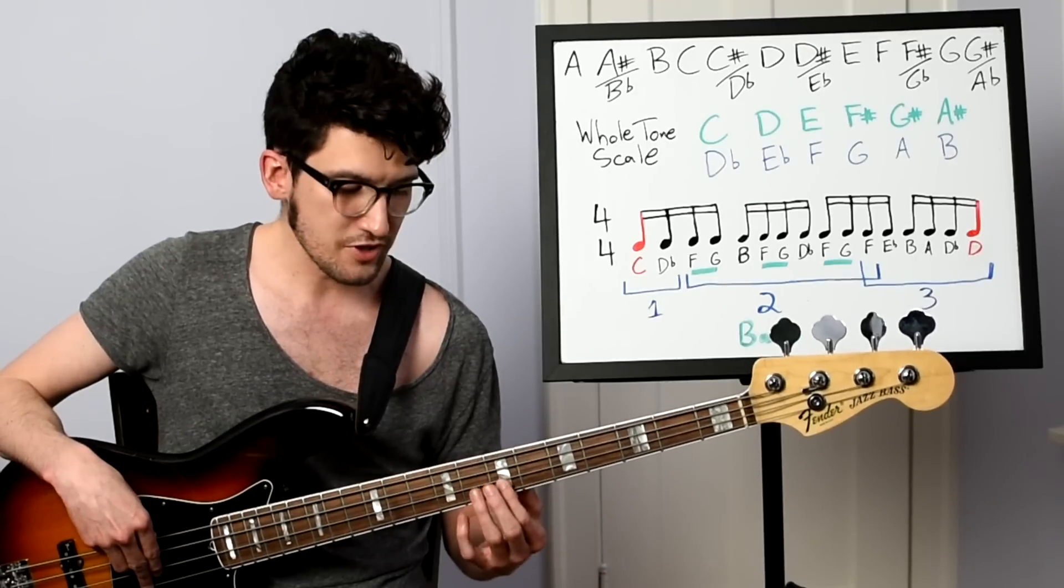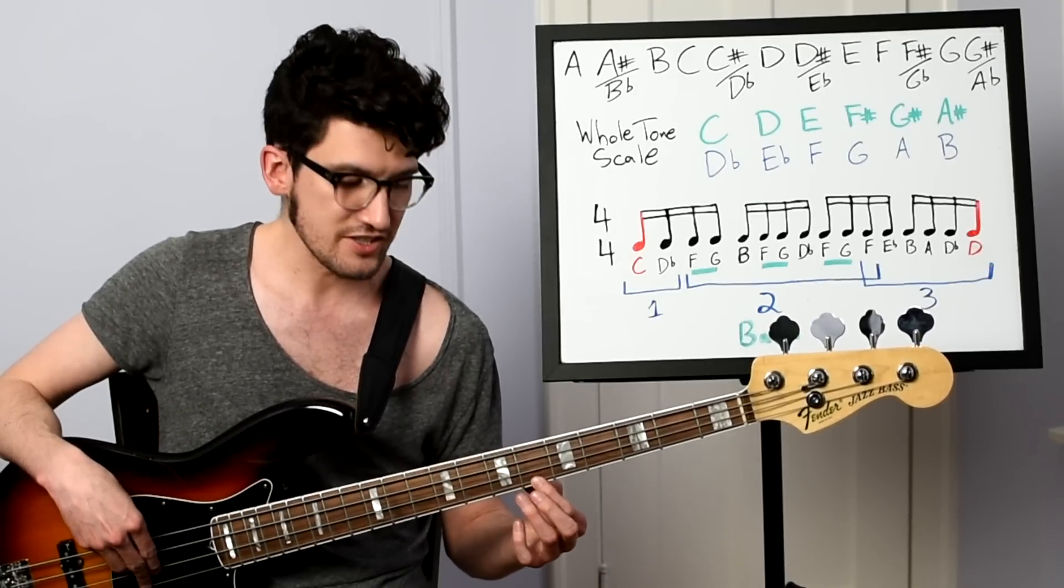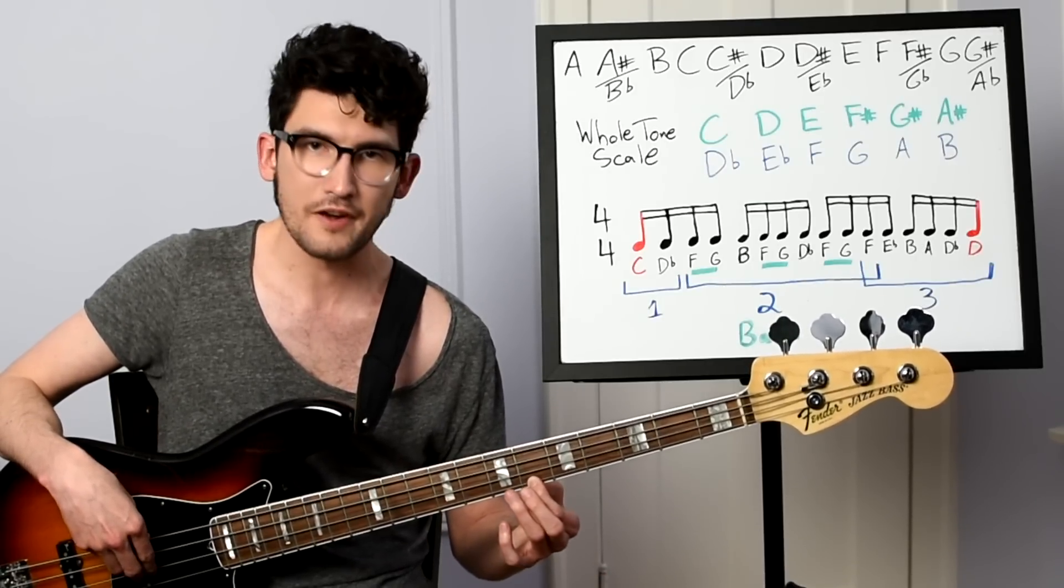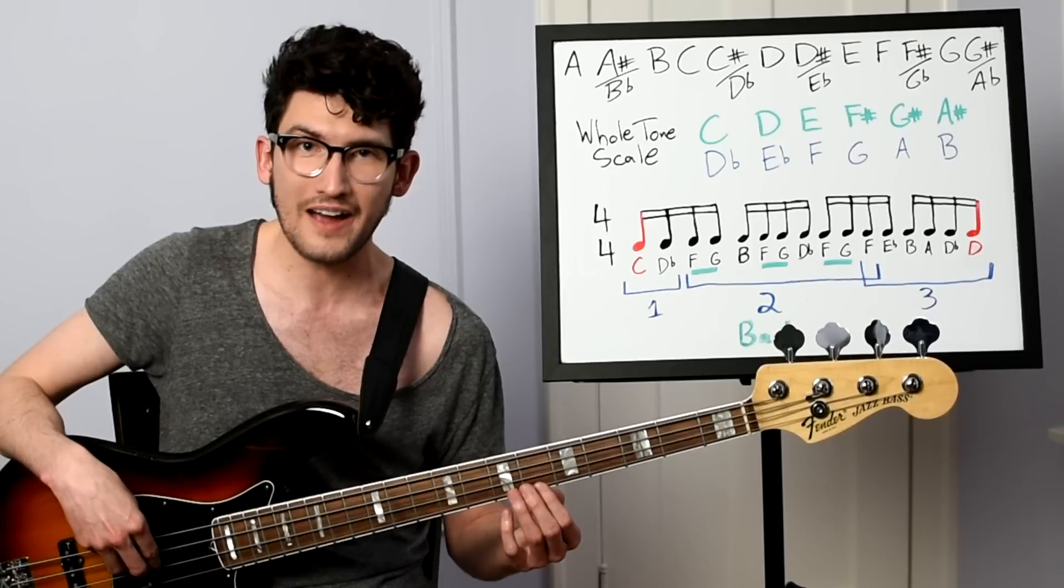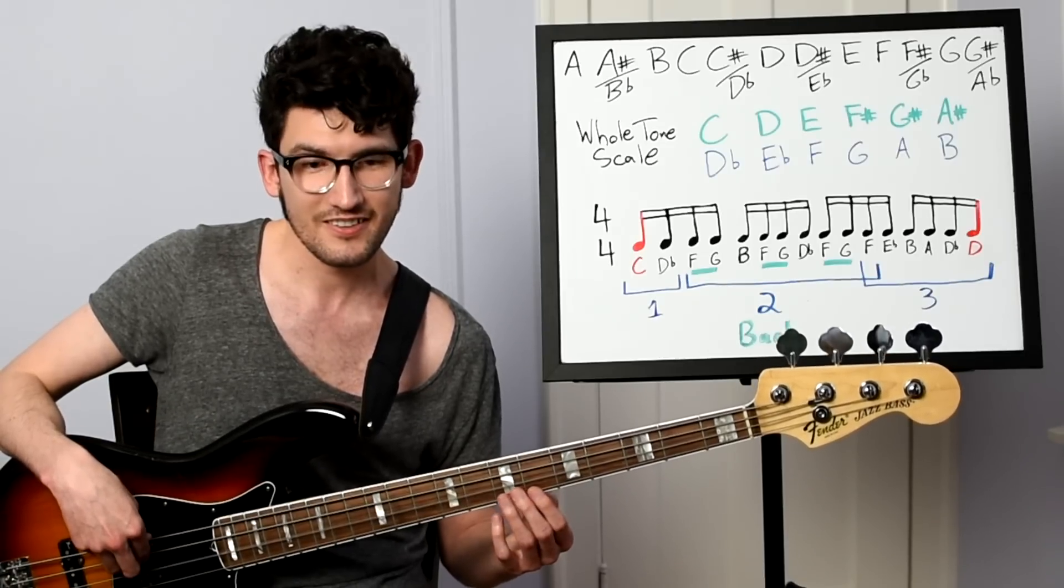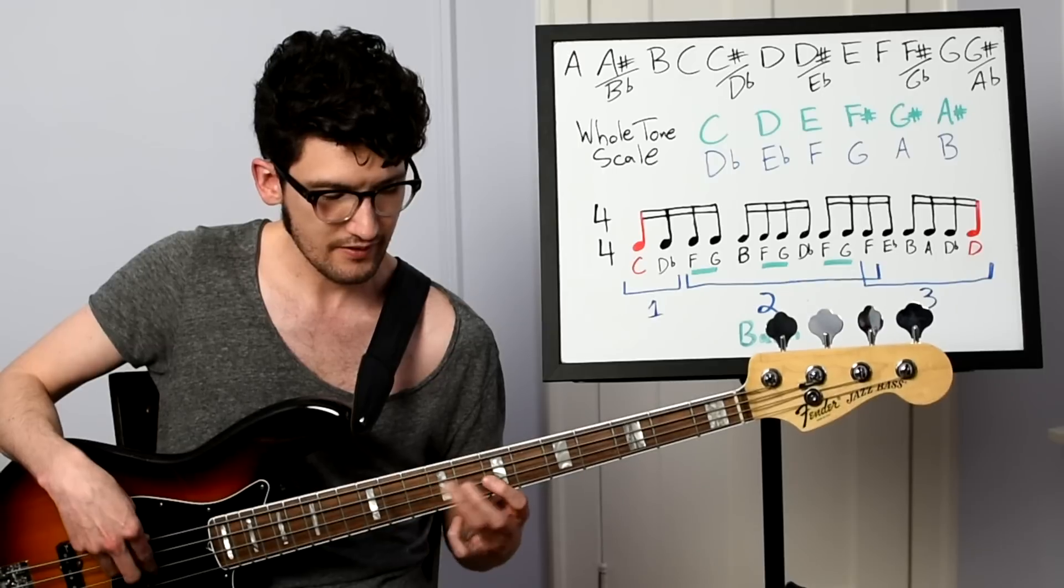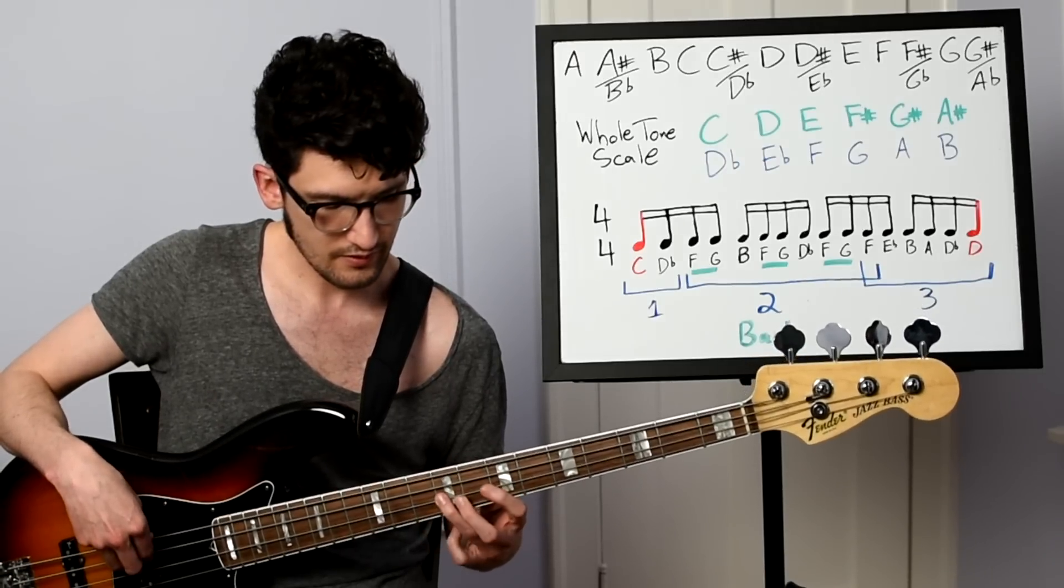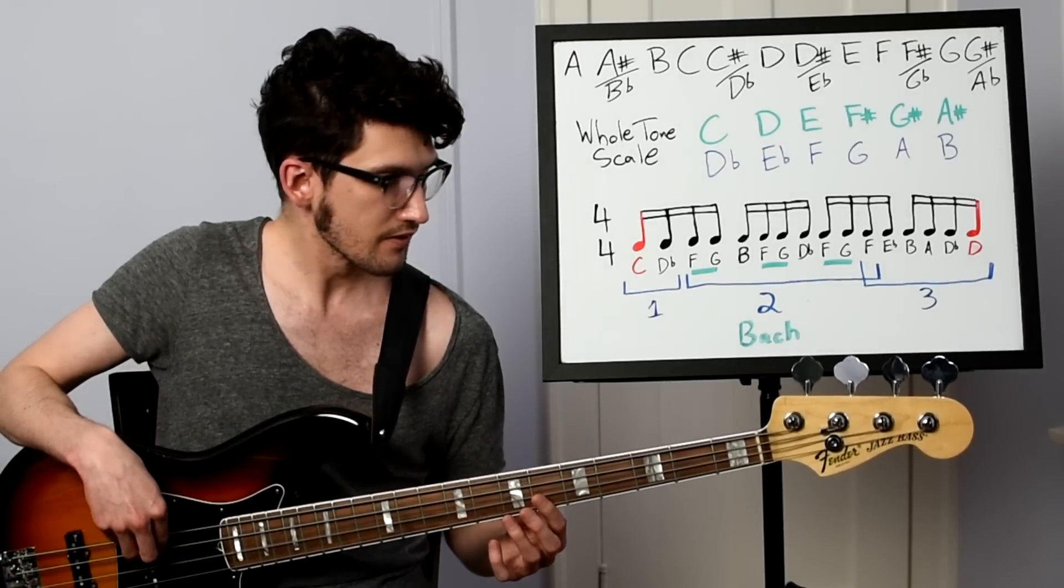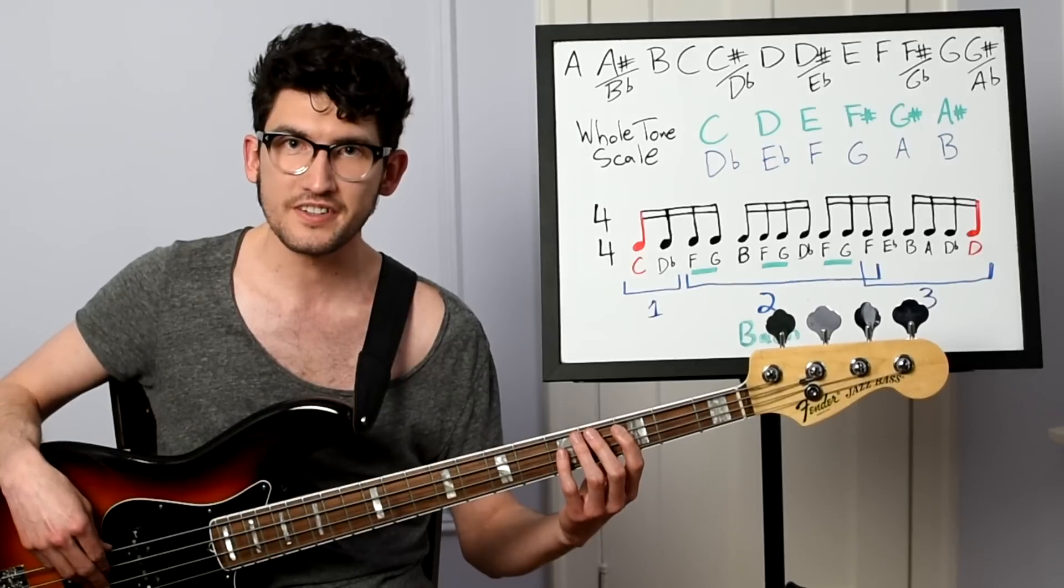Then B to A on the D string with my third and my first. For our final two notes, I'm just jumping over to D-flat on the G string. With my first finger. And then just thwacking an open D. So altogether that sounds like this. Let's hear the whole thing together.